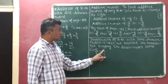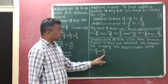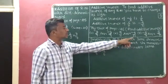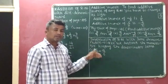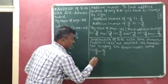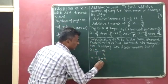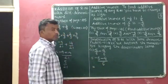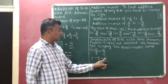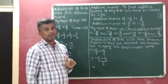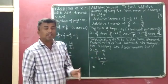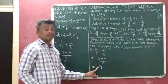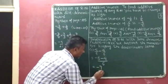The example is: minus 5 by 6 minus 4 by 6. Both rational numbers have the same denominator 6. According to the rule, we subtract the numerators and write the denominator the same. So we get minus 5 minus 4, over 6. Now 5 has a negative sign and 4 has a negative sign — both integers have the same sign. We add them: 5 plus 4 equals 9, and give the same negative sign to the answer. So we get minus 9 by 6.